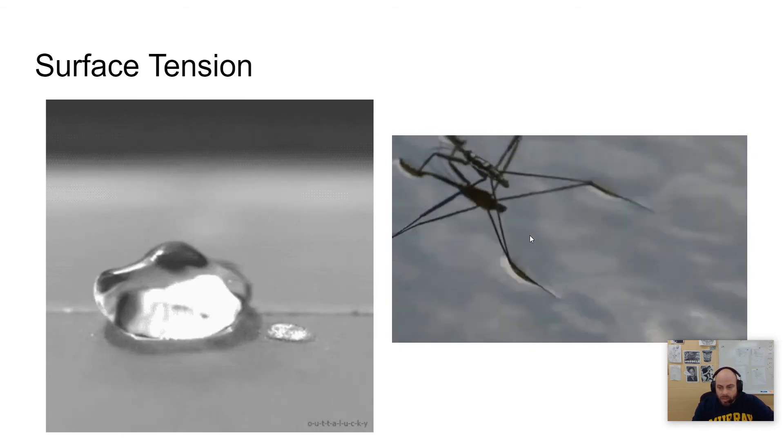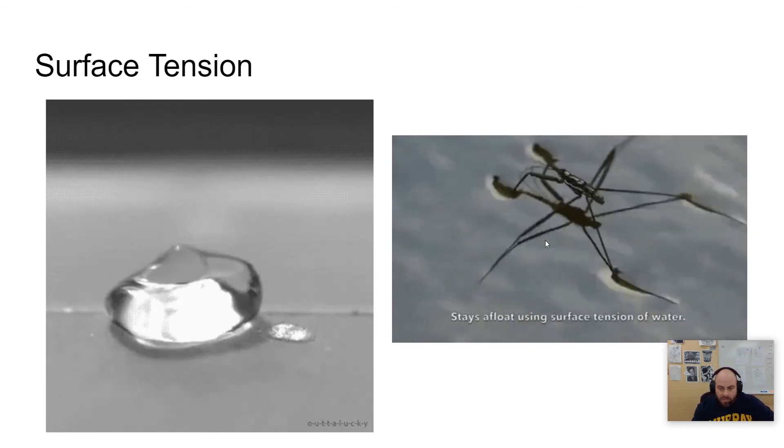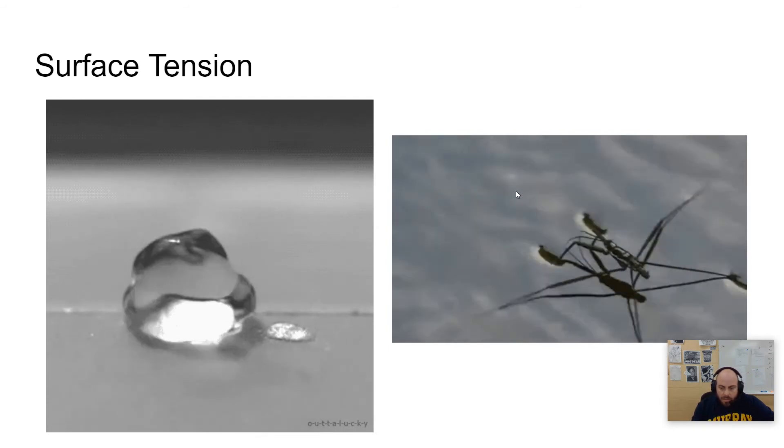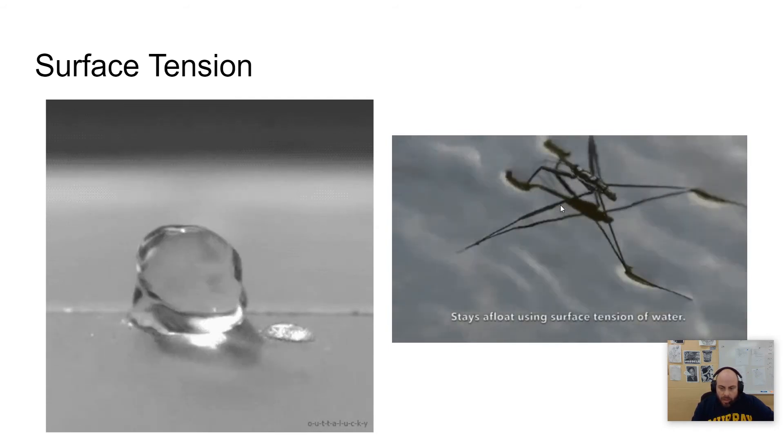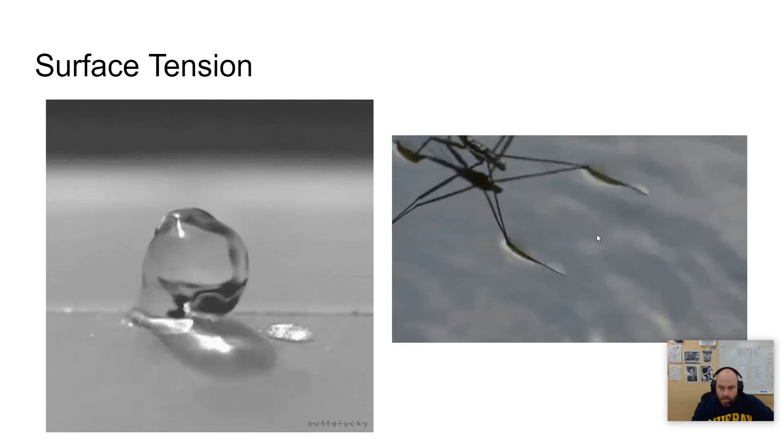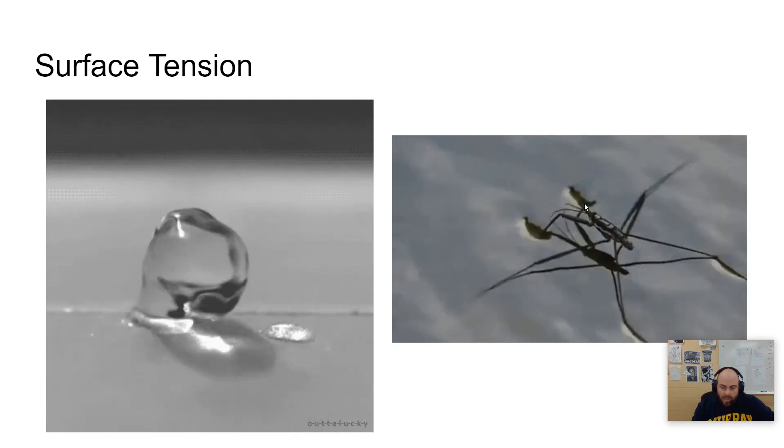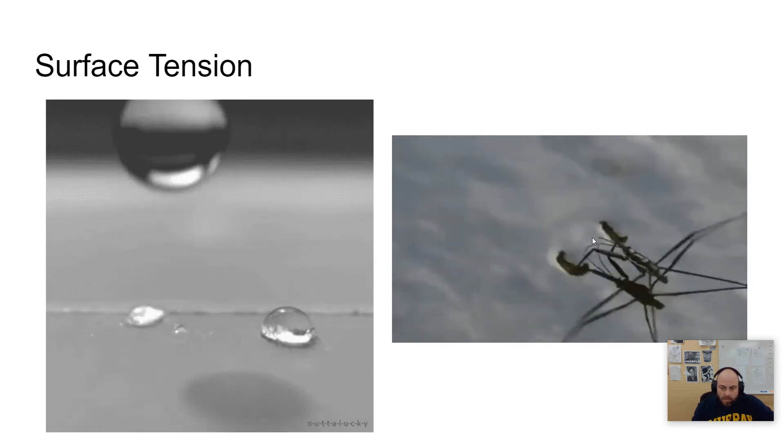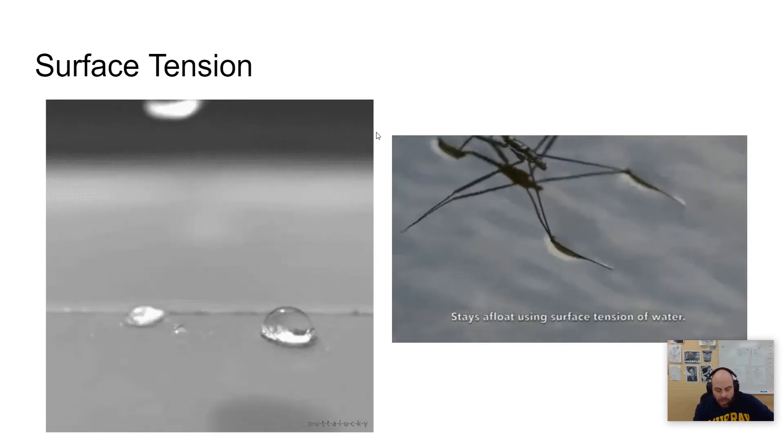Some animals can use this to their advantage by allowing them to just kind of sit on top of the water. This particular organism here called a water strider has hydrophobic pieces on its legs that allow it to just kind of sit on top of the water, move around and do life the way that it does life.